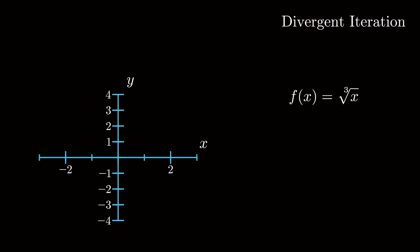A final example is one where the iterations diverge from the solution. For the cubic root of x with any starting point xn, the next iteration point would be xn plus 1 equals to minus 2xn. This means the algorithm would diverge from the solution at each iteration unless the solution is guessed on the first try.